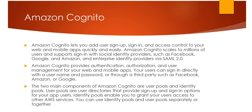The two main components of Amazon Cognito are user pools and identity pools. User pools are user directories that provide sign-up and sign-in options for your application users. Identity pools enable you to grant your users access to other AWS services. You can use identity pools and user pools separately or together.